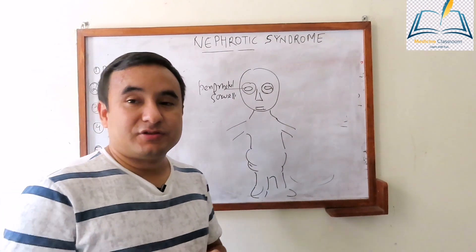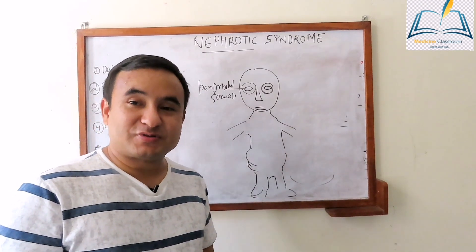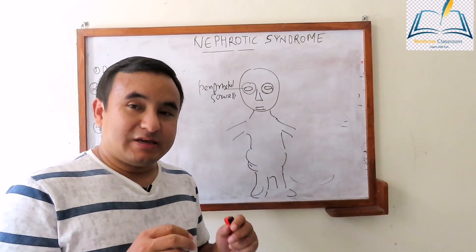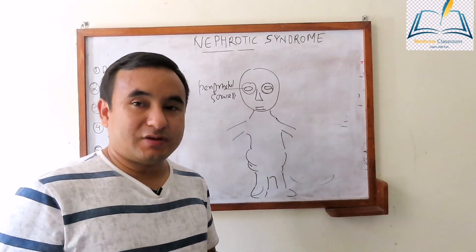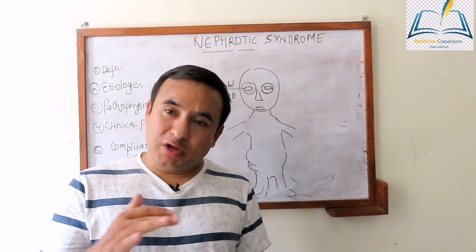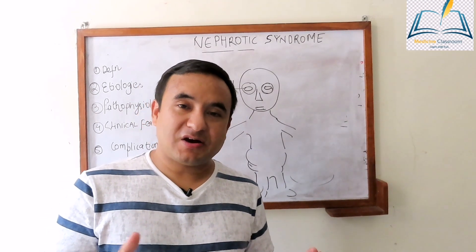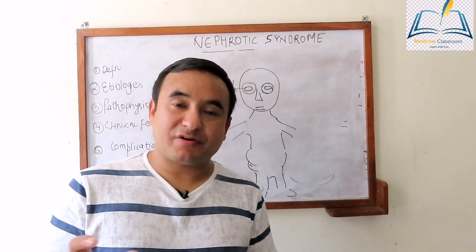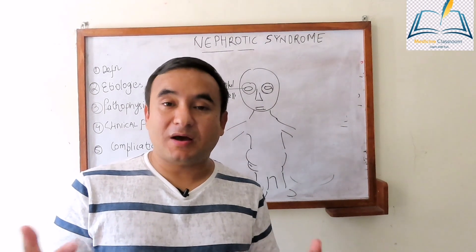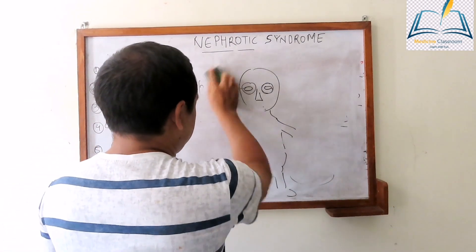In adults, the predominant symptom is edema in the dependent region. They may have other symptoms like decreased appetite and fatigability. When we see a patient with anasarca or gross body swelling, we usually suspect nephrotic syndrome as one differential diagnosis. When we ask the patient about other history, they may give a history of passage of frothy urine — like soapy water urine — because of proteinuria. They can also present with one of the complications of nephrotic syndrome, which we will discuss later.